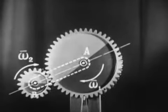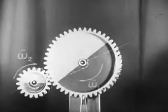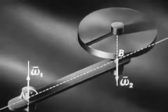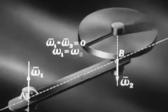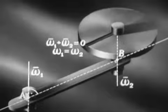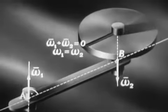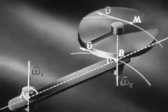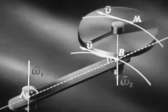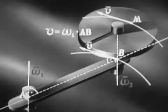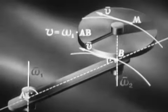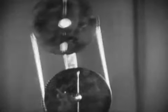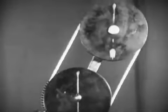В случае пары вращений твердое тело совершает поступательное движение со скоростью, равной векторному моменту этой пары. Скорости всех точек тела одинаковы, траектории конгруентны. Эквивалентность пары вращений поступательному движению можно видеть на примере диска в демонстрационном приборе.